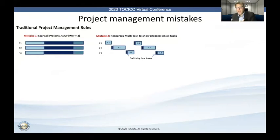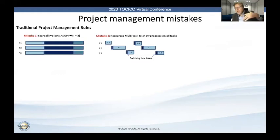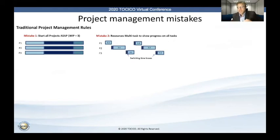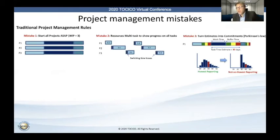The second mistake is they allowed — or almost forced — their resources to multitask. Because as soon as you start projects one, two, and three, those customers expect you to report progress, and that will generate a demand to constantly switch tasks, both task switching and project switching in order to show progress. That will add to further delays. And then the last one is a very interesting question: if we're starting to notice that things are going to take longer, will it help to start holding people accountable, to turn their estimates into commitments? Will that help or harm?